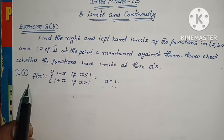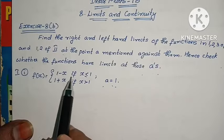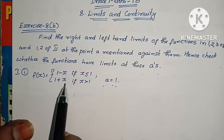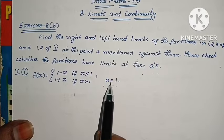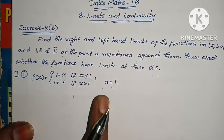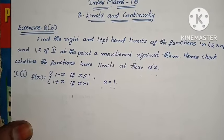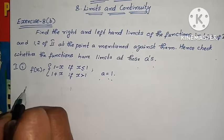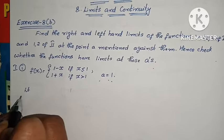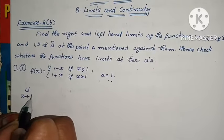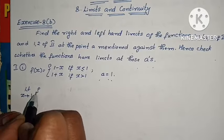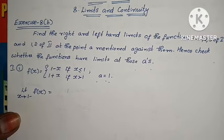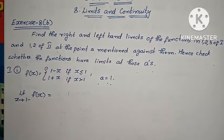That is the first Roman, first one. f(x) equals 1 minus x if x is less than or equal to 1, and 1 plus x if x is greater than 1. We need to check whether the limit exists at a equals 1. First, limit x tends to 1 minus f(x) — that means left-hand limit.